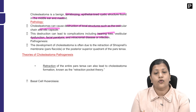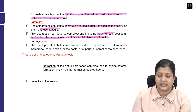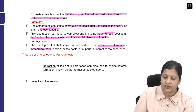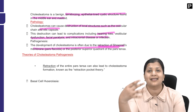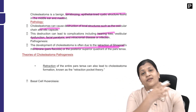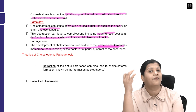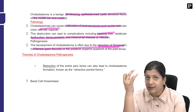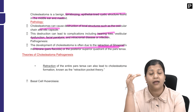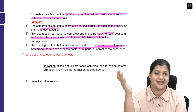Regarding the pathogenesis of cholesteatoma, it is due to retraction of the pars flaccida or posterior superior quadrant. Over time, various mechanisms lead to a retraction pocket accumulating keratin debris — including negative pressure, metaplasia, basal cell hyperplasia, and epithelial invagination, among other theories.